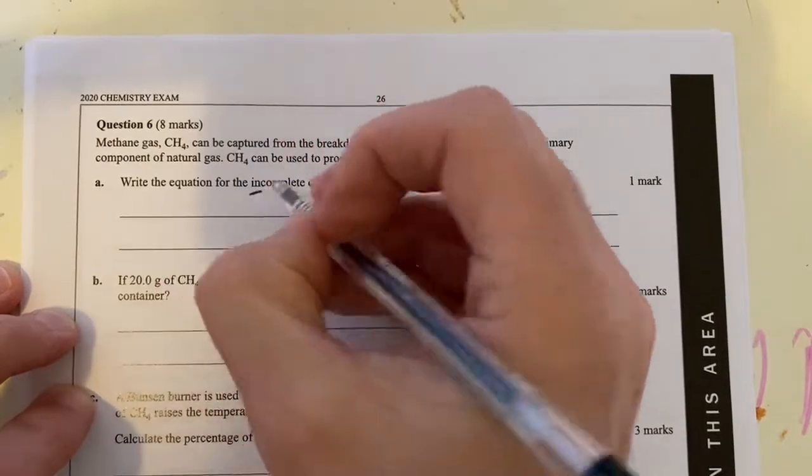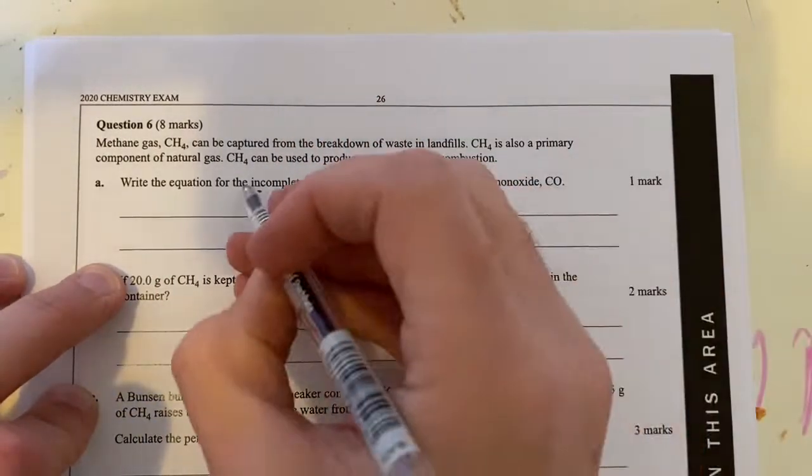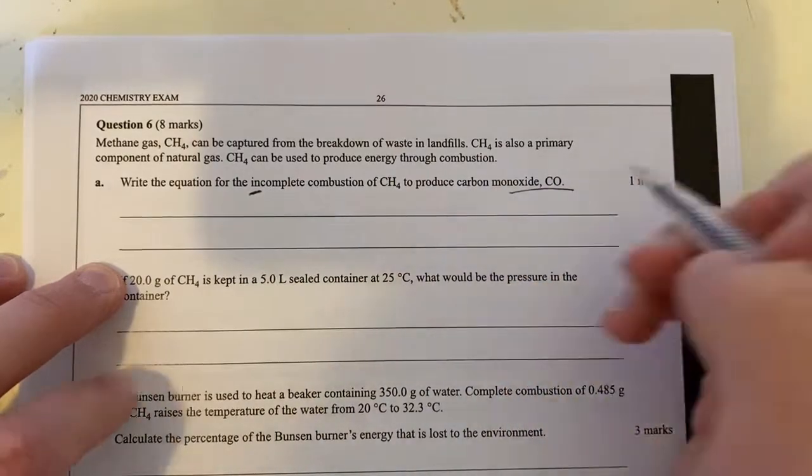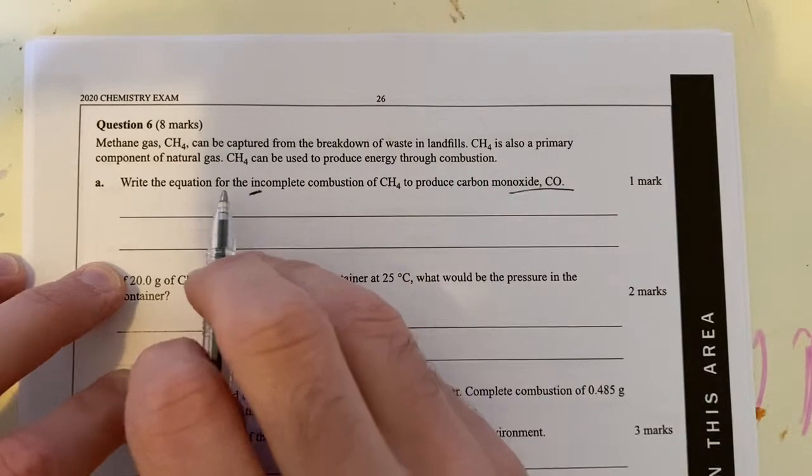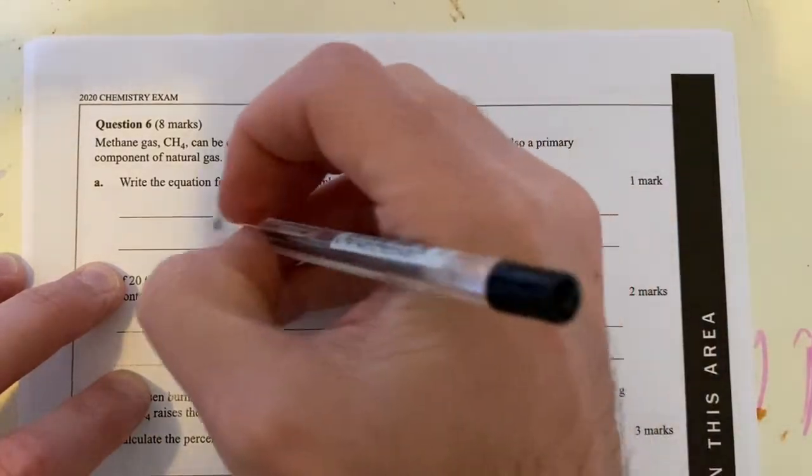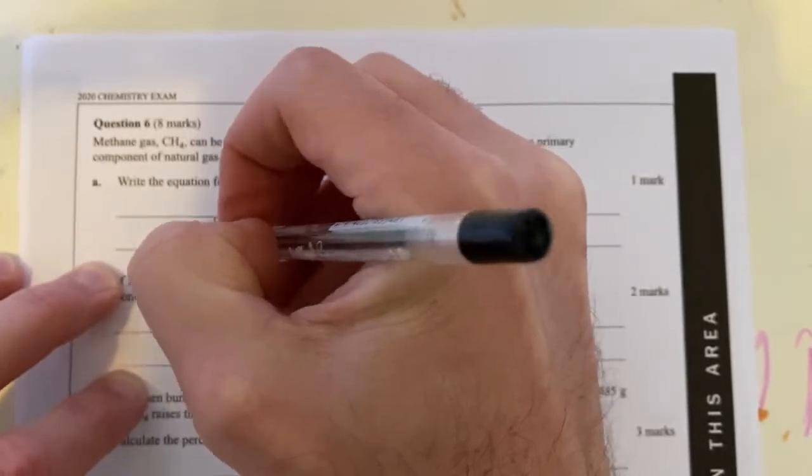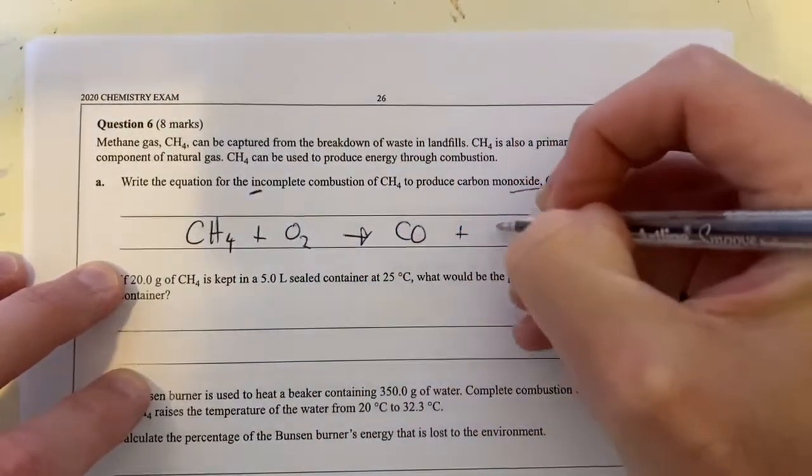Write the equation for the incomplete combustion of CH4 to produce carbon monoxide. So incomplete combustion, it tells you it's carbon monoxide, which is nice. But you should also know that even if they just said incomplete combustion, you should know the product is carbon monoxide. That's going to be CH4 plus O2, producing CO plus H2O.